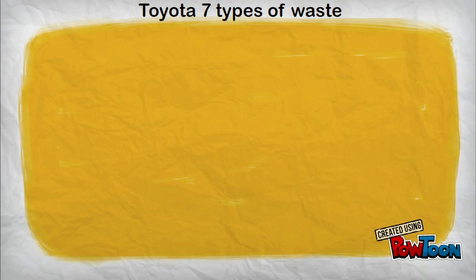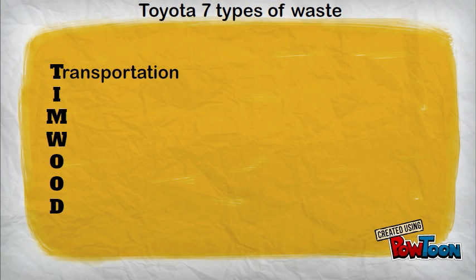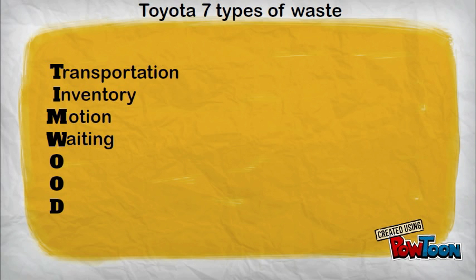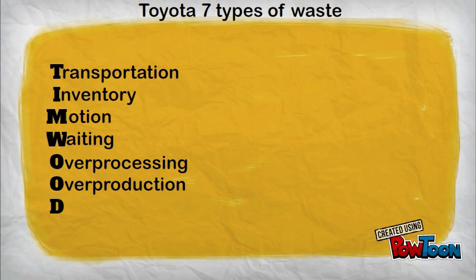Toyota identified seven types of waste with the acronym TIMWIT: unnecessary movement of people or parts; unnecessary storage of materials and products; unnecessary movement of people or parts within a process; people or parts waiting for a process to be completed; overprocessing — processes arising from poor design at the process chain; overproduction — processing more than what is immediately needed; and defective products not meeting quality requirements, needing repetition or correcting processing.